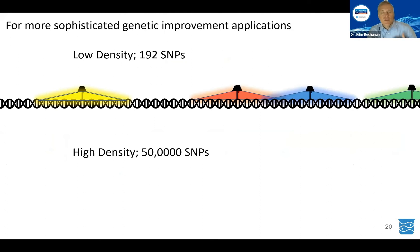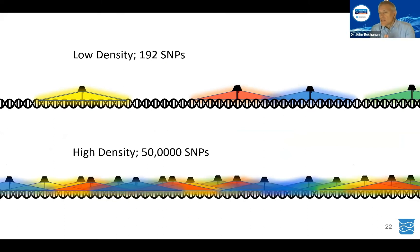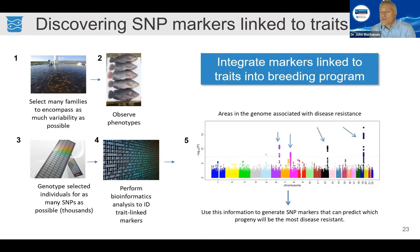As you move forward thinking about how to leverage the genome, beyond low-density panels we also have high-density SNP panels — this can be 50,000 SNPs. This bigger density of markers can cover and help you predict pretty much the entire genome, giving you much more power for sophisticated breeding applications. You can use these high-density panels to phenotype animals for a trait — such as disease resistance or feed conversion ratio — scanning the entire genome with 50,000 SNPs and then finding SNPs that are predictive of that trait.